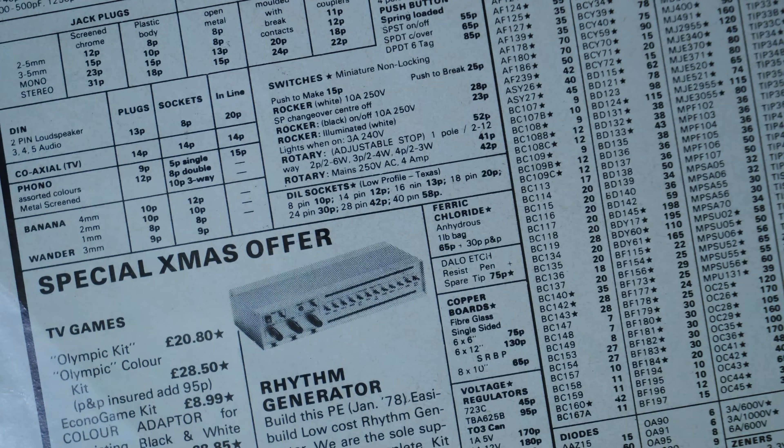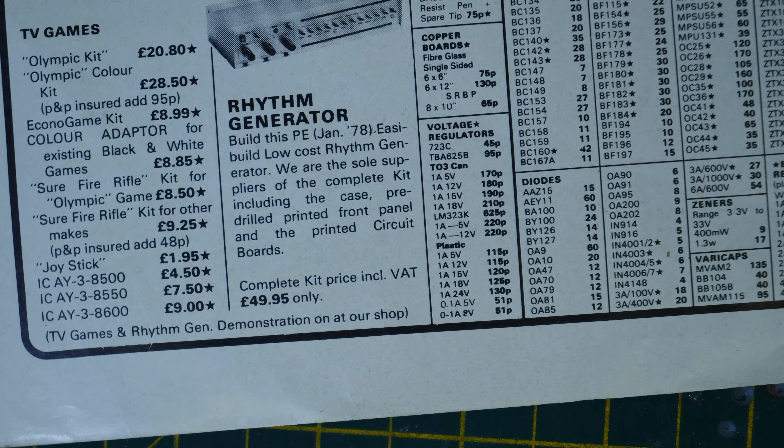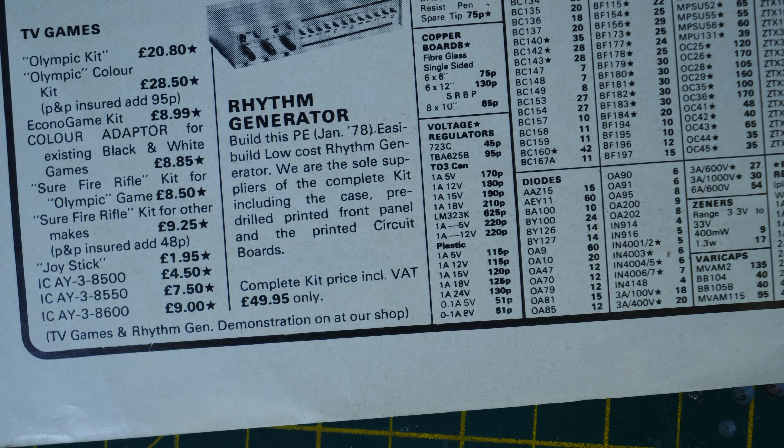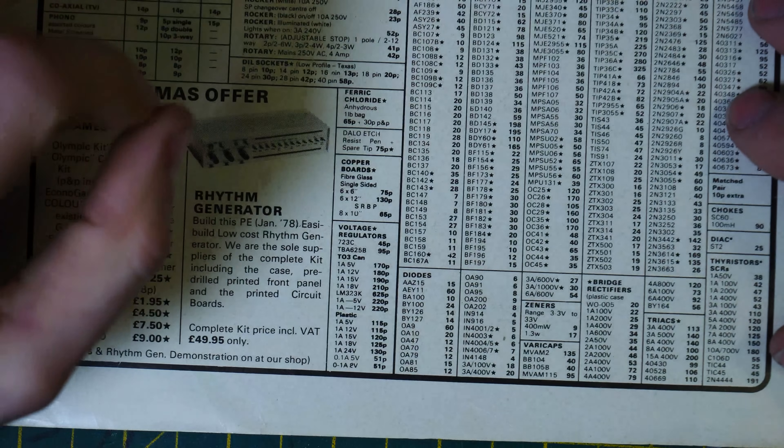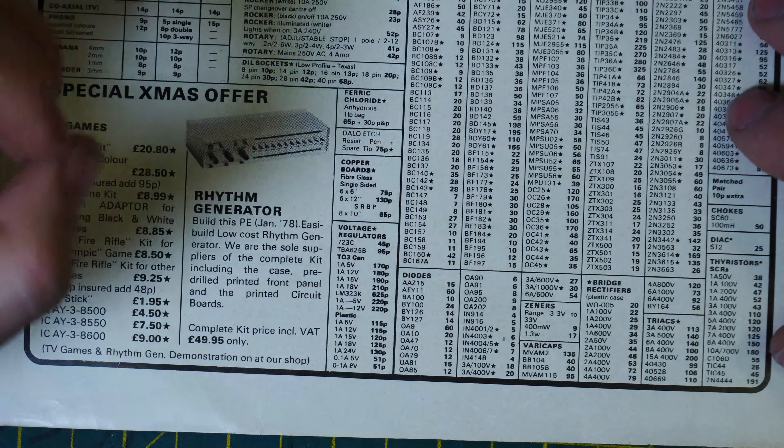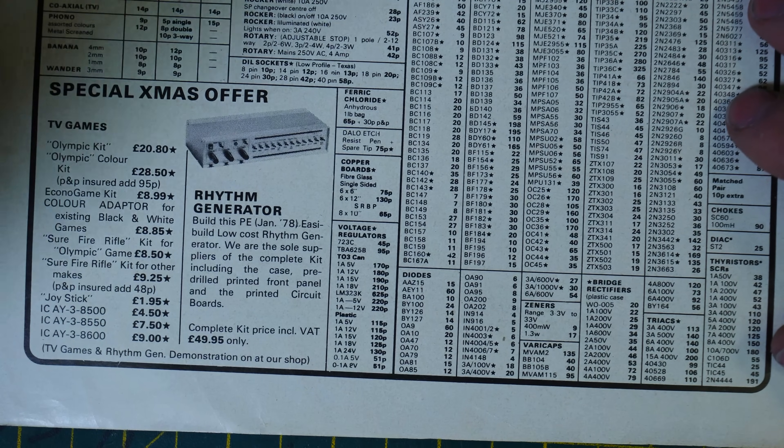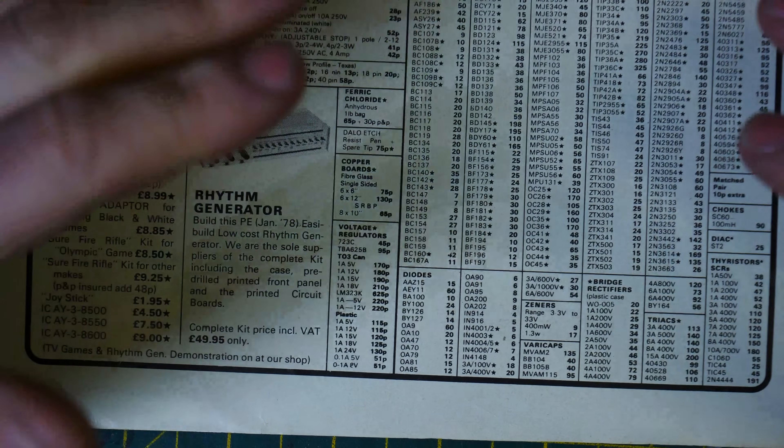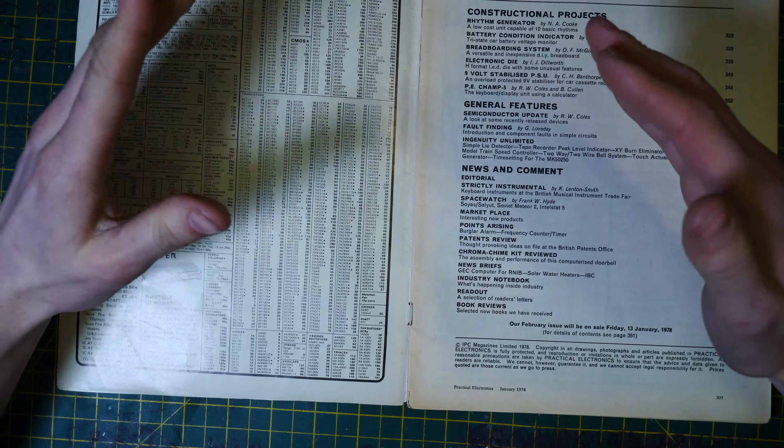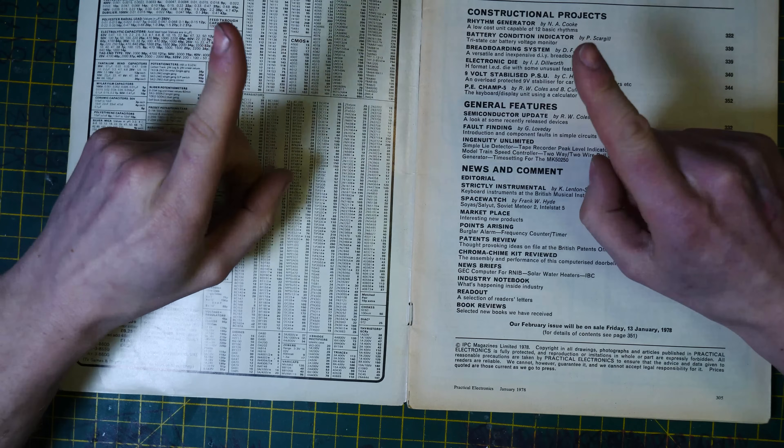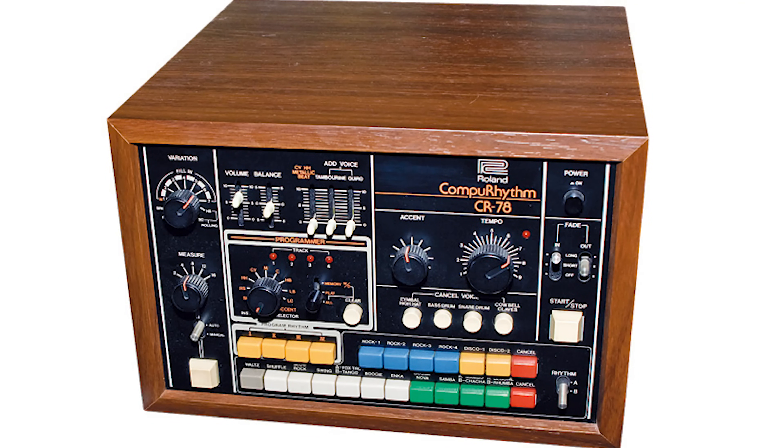But yeah, you could have got that whole kit for £49.95, including VAT. Low-rise on the live stream just mentioned that this is, in today's value, £252.39. So yeah, I guess that's all right for a drum machine kit. 1978, obviously, was when the CR-78 came out, which was arguably the first programmable drum machine.